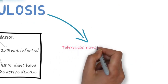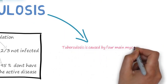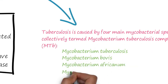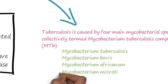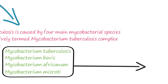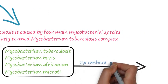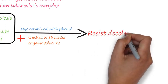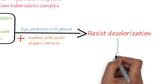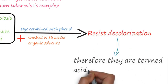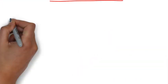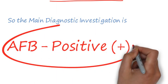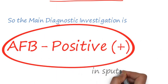Tuberculosis is caused by four main bacterial species collectively termed Mycobacterium tuberculosis complex. When stained with dye combined with phenol and washed with acidic organic solvents, they resist decolorization, and therefore they are called acid-fast bacilli. The main diagnostic investigation is a sputum test that is positive in the AFB test.